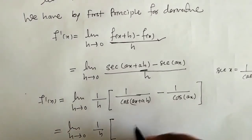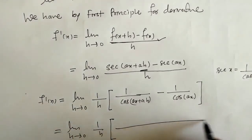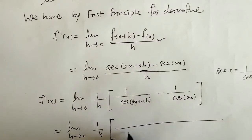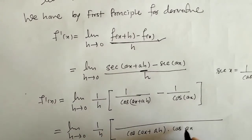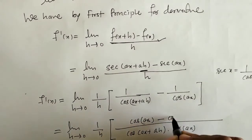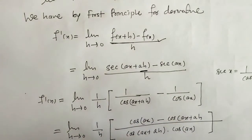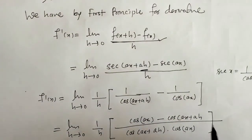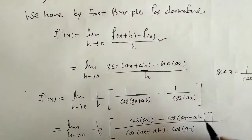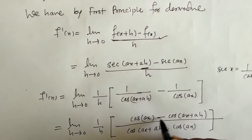We need to do further simplification, so we will do cross multiplication here. After cross multiplication, in the numerator we have cos(ax) - cos(ax + ah), and the denominator is h × cos(ax + ah) × cos(ax).